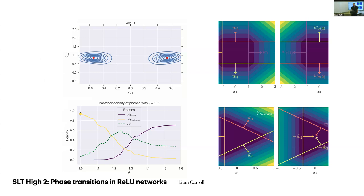SLT High two: Liam Carroll is going to take those ideas about phases, phase transitions, and free energy — which will be basically purely abstract in the first lecture — and show you what they mean in a minimal neural network that has first and second order phase transitions. This is a one hidden layer ReLU network. Liam's going to talk about all the symmetries — you can classify all the possible symmetries of that network, including one quite strange one — and he'll explain how those symmetries give rise to phase transitions as you vary the true parameter or as you vary the data the network is learning from.